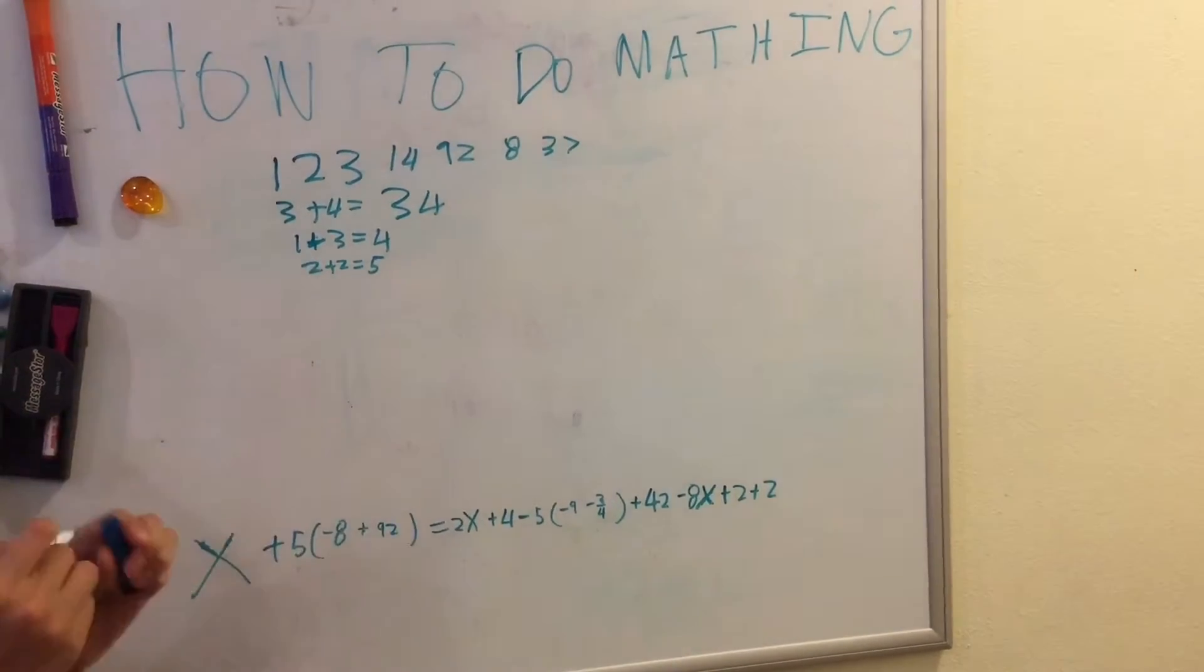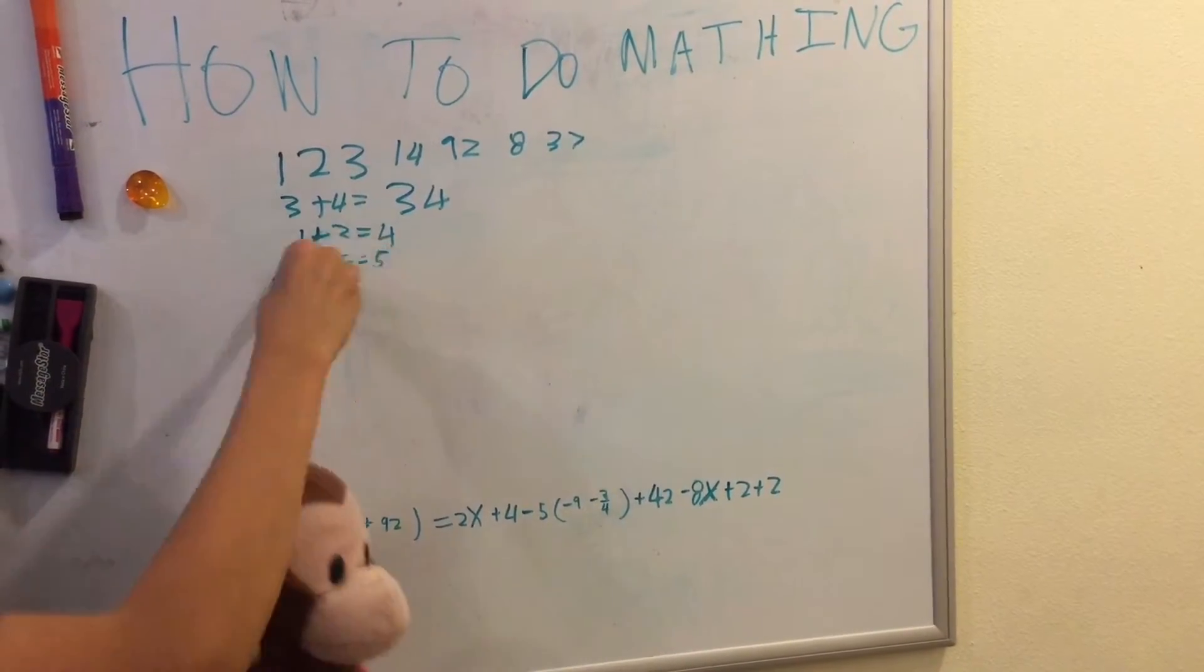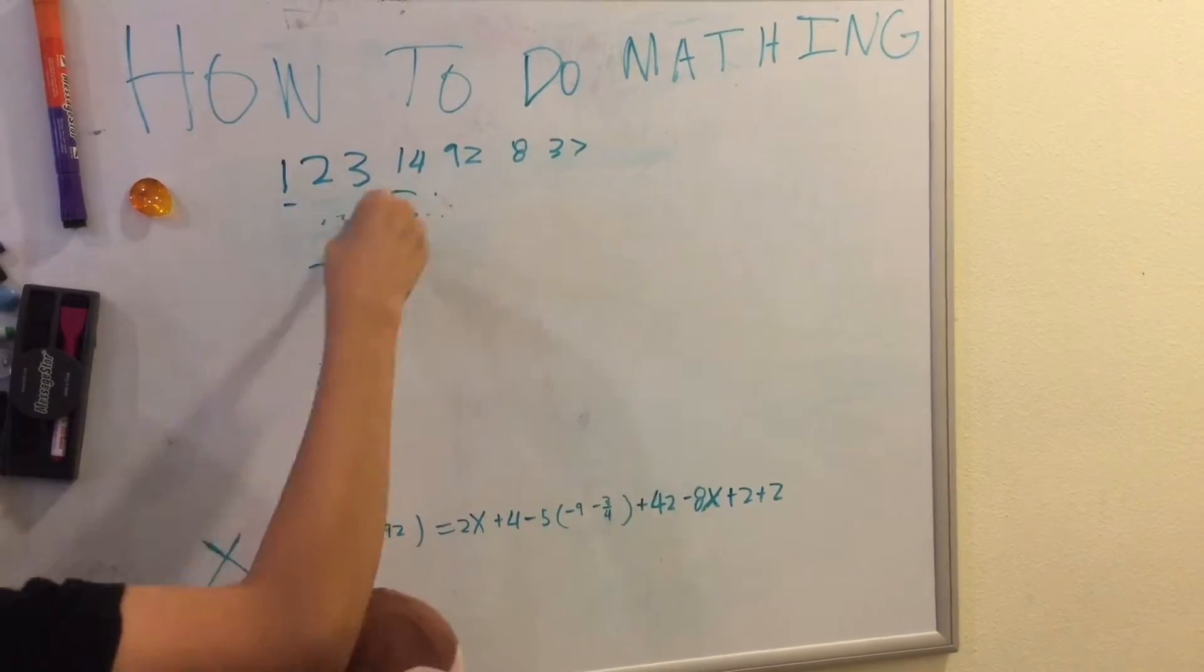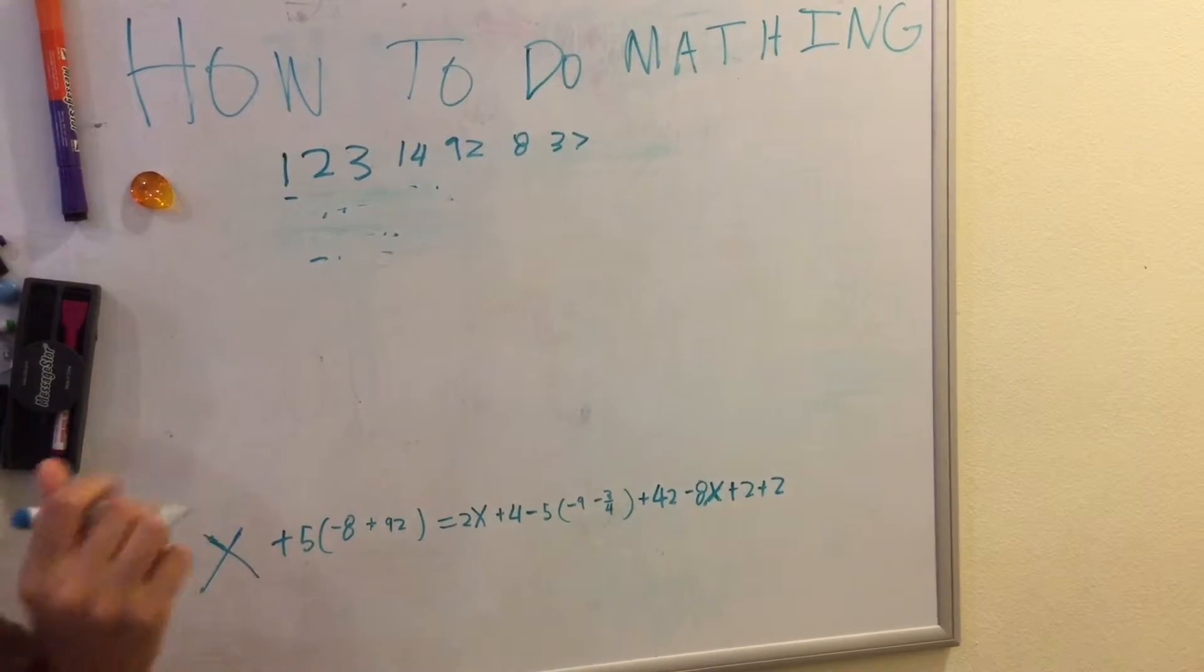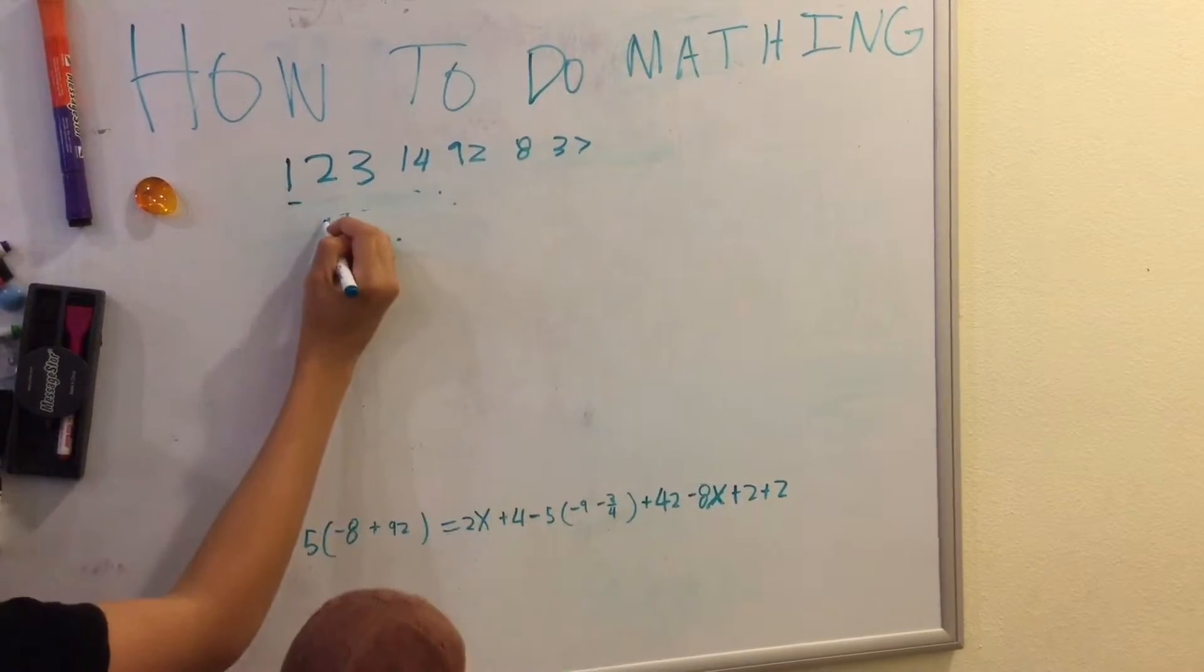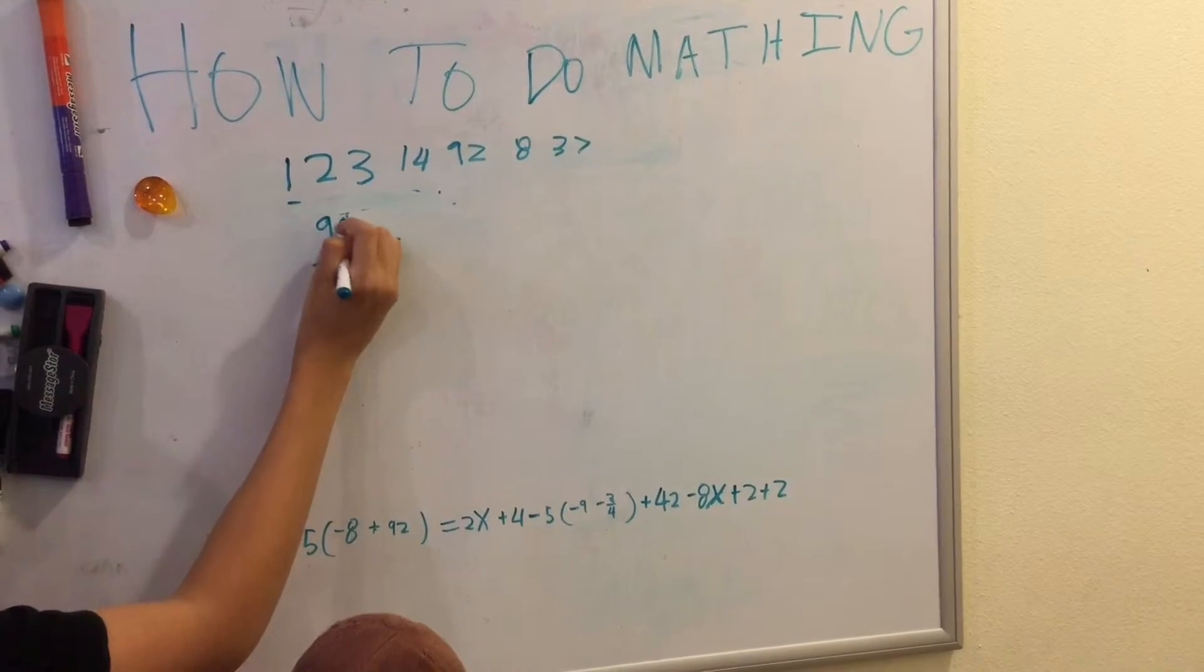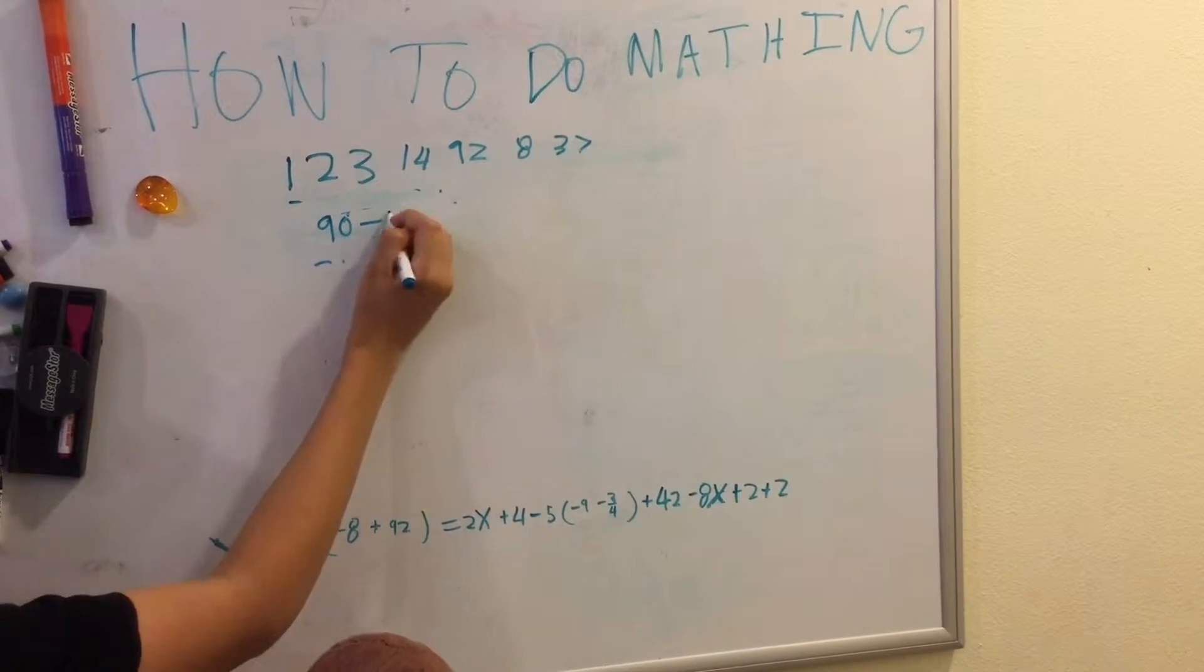Let Brandy erase that. Because Brandy is going on to subtraction. And Brandy thinks that's okay. Let's see. What is 90 minus two?